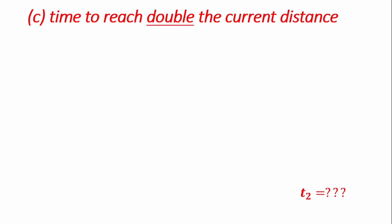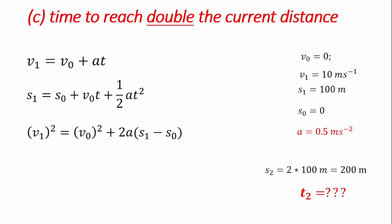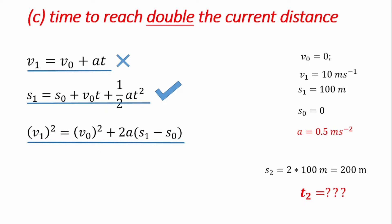The next question is: what is the time required to double the current distance? Let's call that time T2. To double the current distance means we now have a distance of 2 times 100 meters, which is 200 meters. Checking our formulas, the first formula does not contain distance, so it's unsuitable. The second formula has distance, initial velocity, and acceleration, so it can help us get our answer. The third formula has final velocity V1, but we don't have the velocity at the time the vehicle reaches 200 meters, making it unsuitable since we'd have two unknowns.